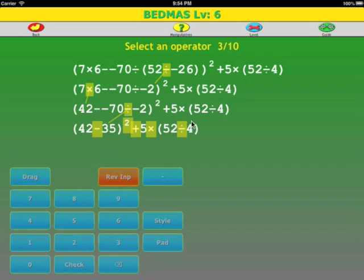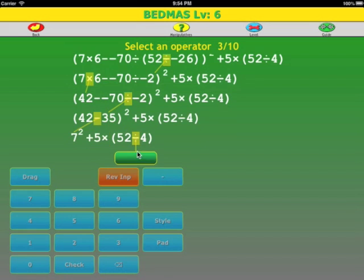We have brackets, brackets, 42 minus 35 is 7. We still have brackets, so we evaluate the brackets. One operator, 52 divided by 4.